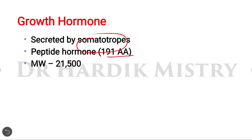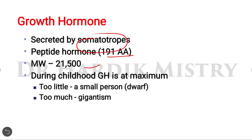Its molecular weight is 21,500. During childhood, growth hormone is at maximum level. When growth hormone is too little secreted, the person becomes small, which is known as a dwarf. When growth hormone is more secreted, the person becomes a giant, which is known as gigantism.